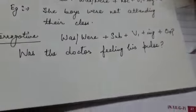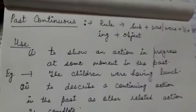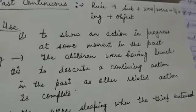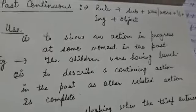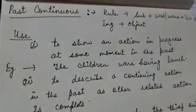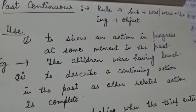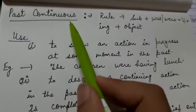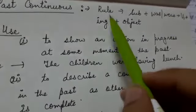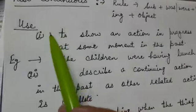Our next topic is past continuous tense. Past continuous — kaun sa tense hota hai? Jo hum progressive ya continuous action ko show karne ke liye use karte hain. It's past, means past mein jo cheez ki continuity rahi hogi, uske baare mein is mein baat karte hain. Since it's continuous, verb's first form with -ing will be there. And since it's past, 'was' or 'were' will be used.